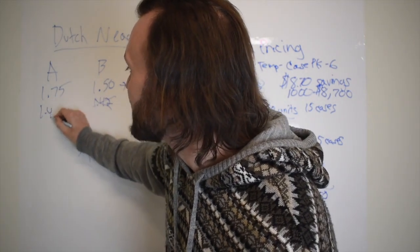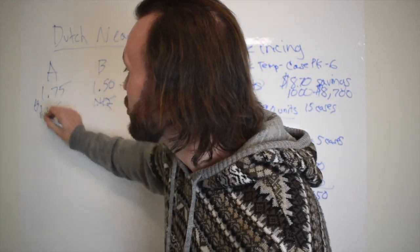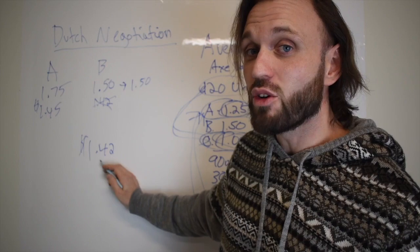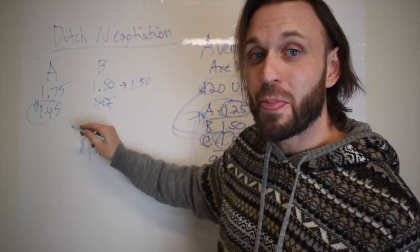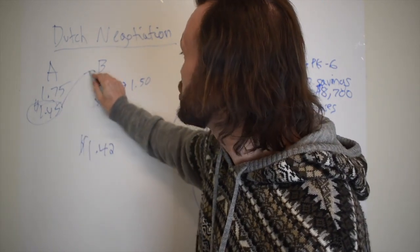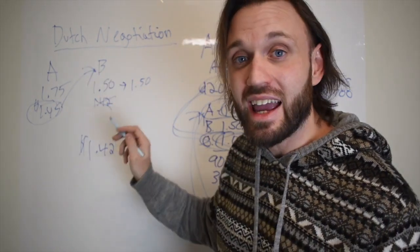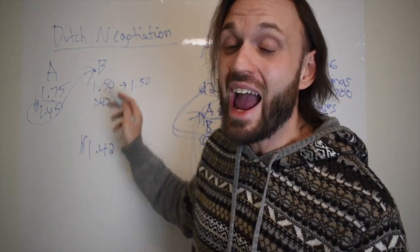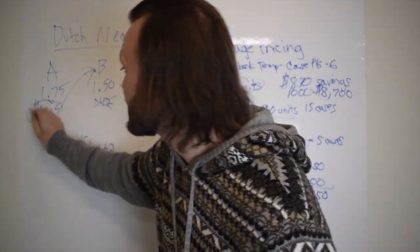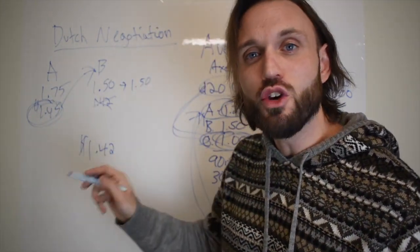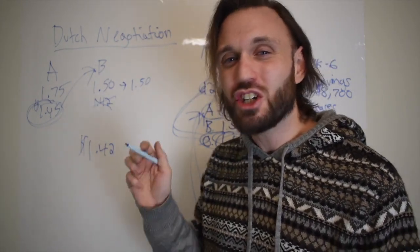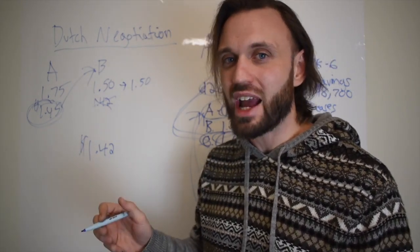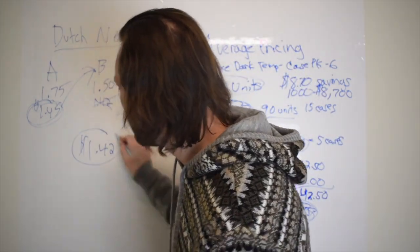So now you're only three cents away from this number. You're going to take this $1.45 and bring it back to distributor B and say, hey, distributor A told me they will give me this product for $1.45. Can you beat that? And then they're going to think about it, and there's a high chance, a very high chance, that they're going to come down to this original asking price of $1.42 because they want the sale over their competitor.